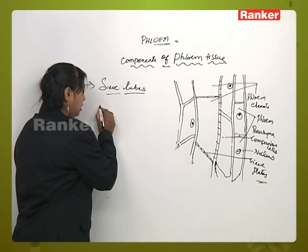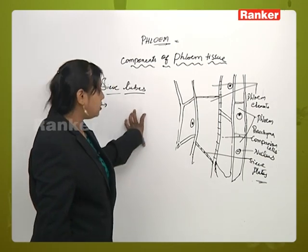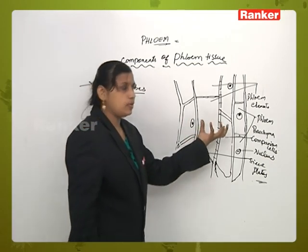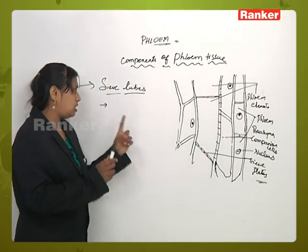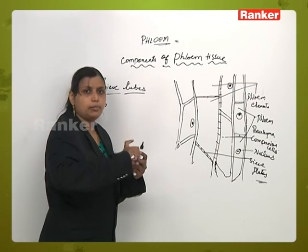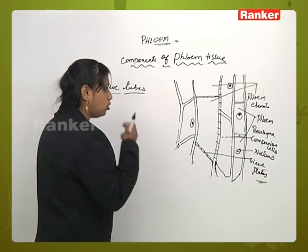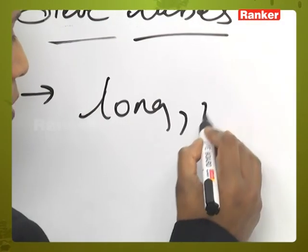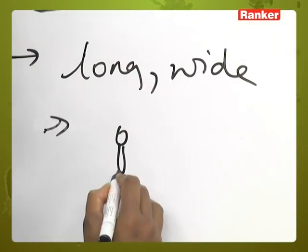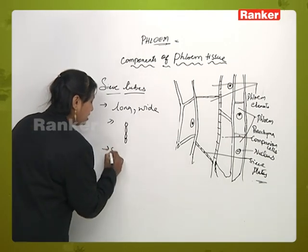Sieve tubes: the sieve areas of sieve tubes are a more specialized type of structure. These are connected to other sieve elements with the help of tube-like structures. These sieve tube-like structures are originally in the form of a tube — they are connected one above the other and each end forms perpendicular rows of cells. These cells are long and wide, connecting from one cell to the other with the presence of sieve pores.